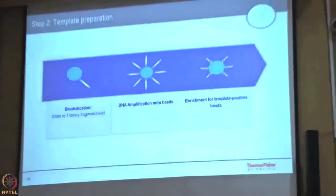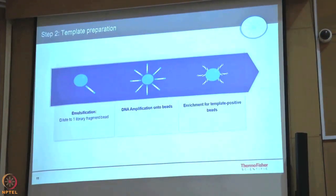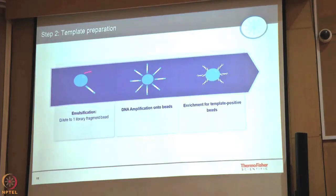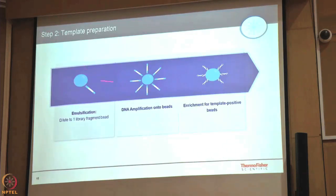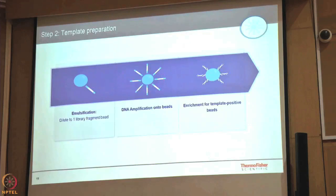The second step — template preparation — can be done semi-automatically using an OT2 and an enricher, or fully automatically using the Ion Chef. Hundreds and thousands of library molecules coming from the amplified sample undergo clonal amplification — one library molecule gets clonally amplified onto the ion sphere — so that when this molecule is being read, the signal is strong enough to differentiate noise from signal.